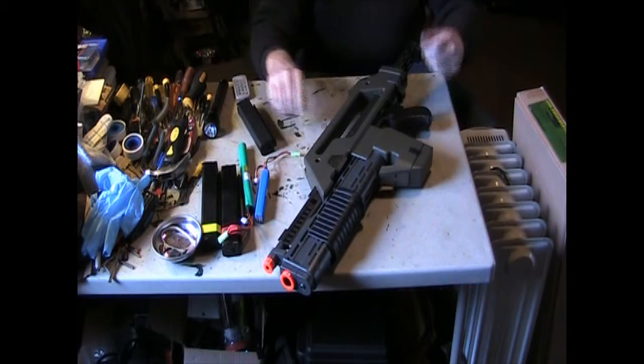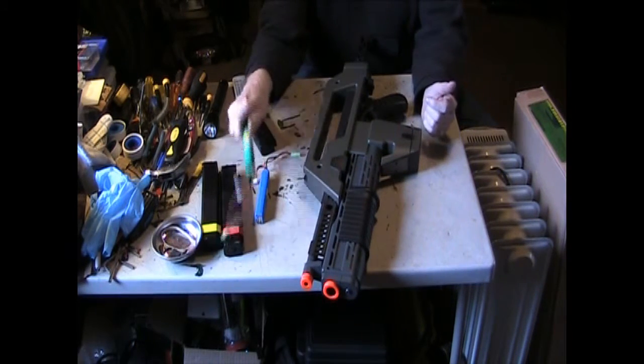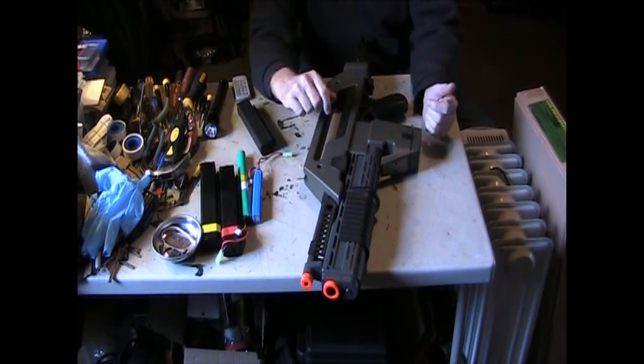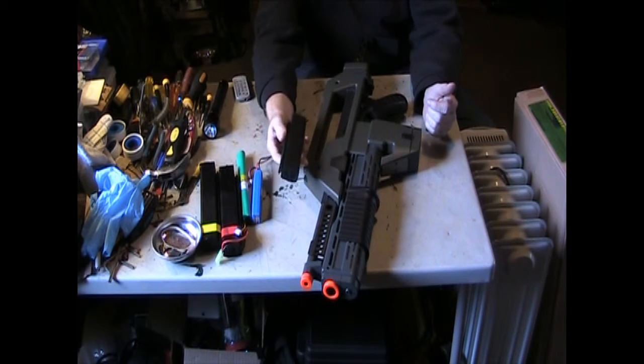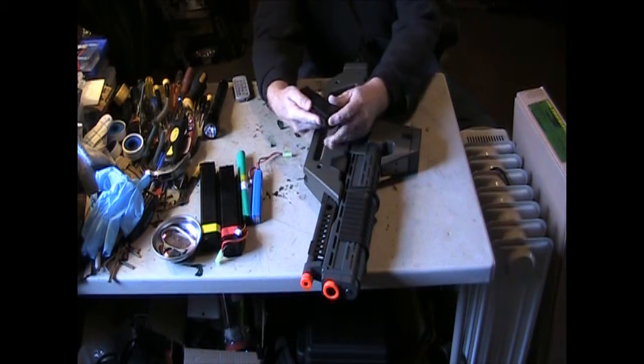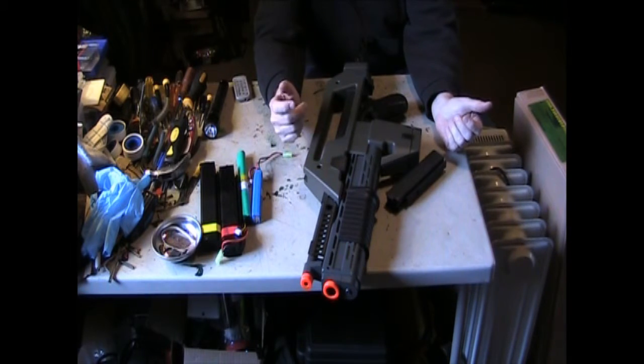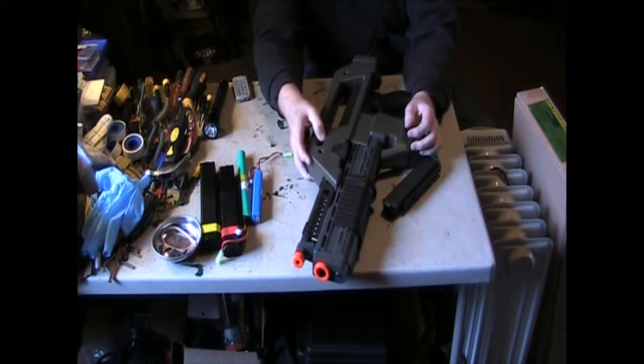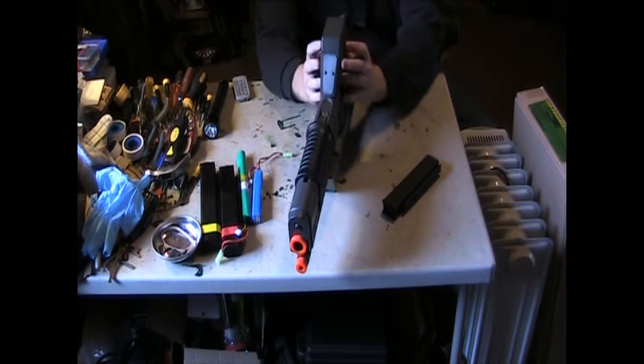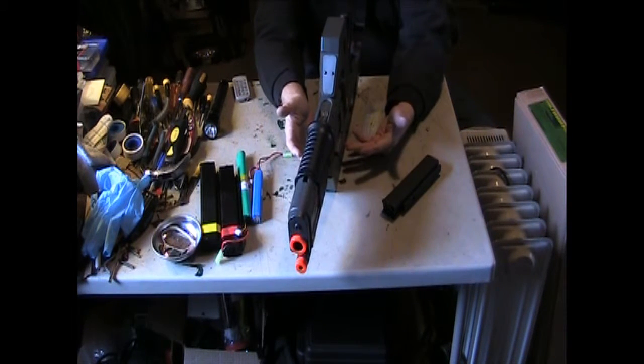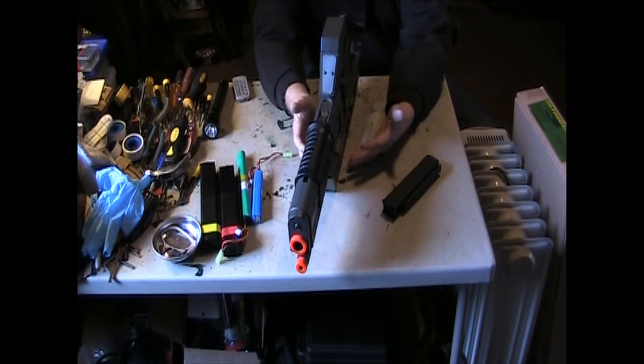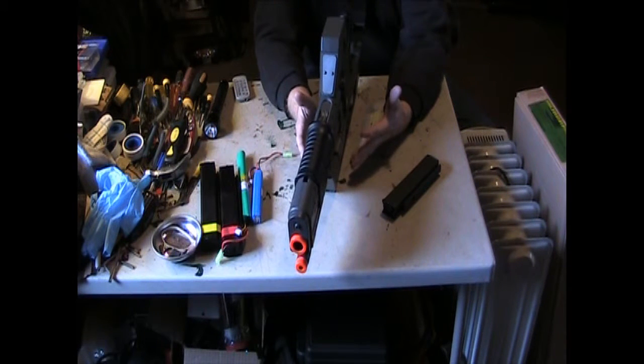So, what it comes with, besides the stick battery which I gave away, this is a 210 round high cap, has a little winding wheel on the bottom, and it loads. This is all based on Thompson inside here.